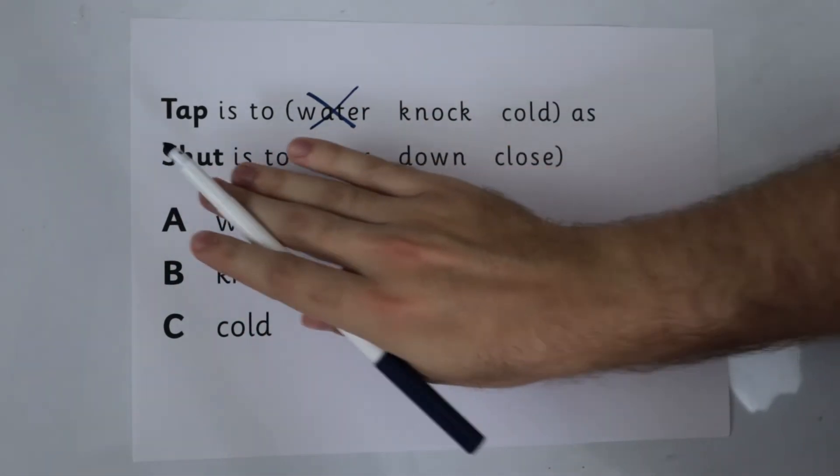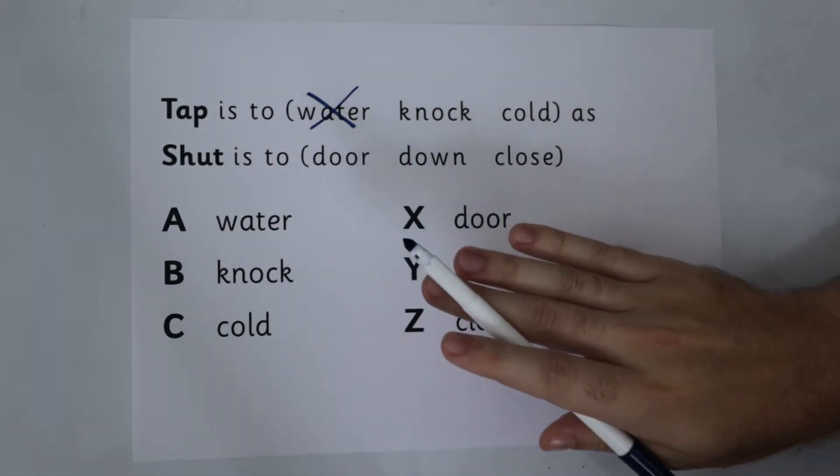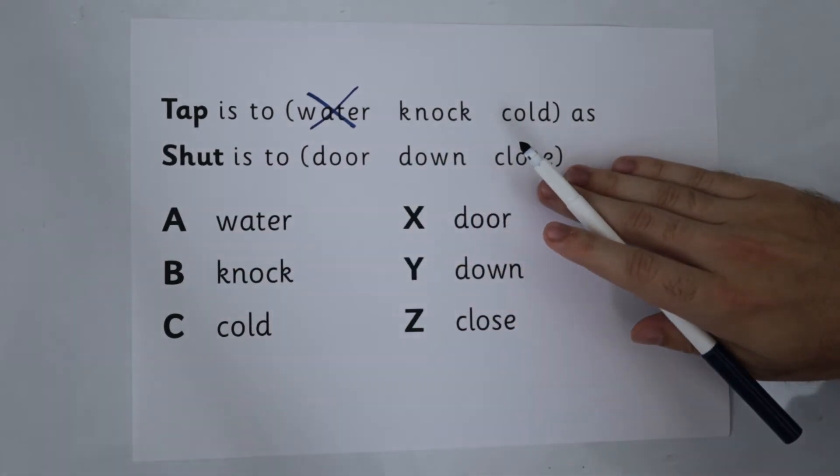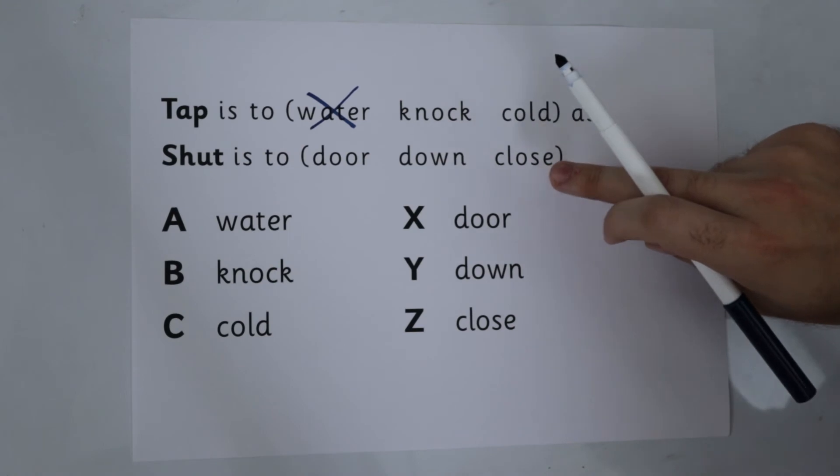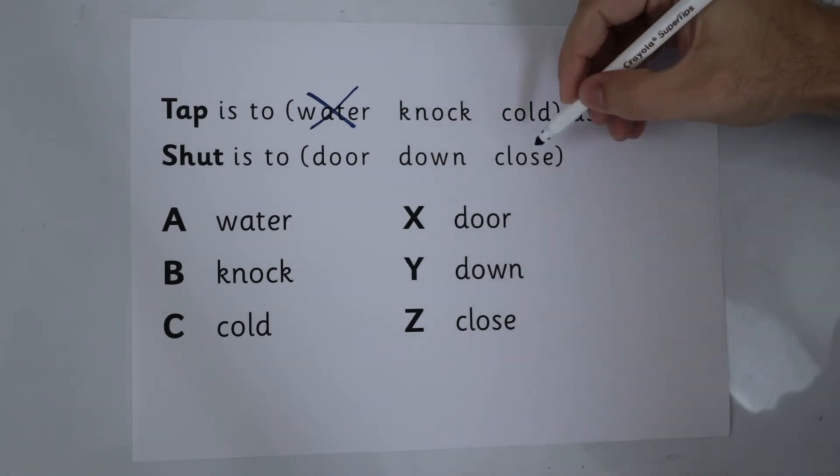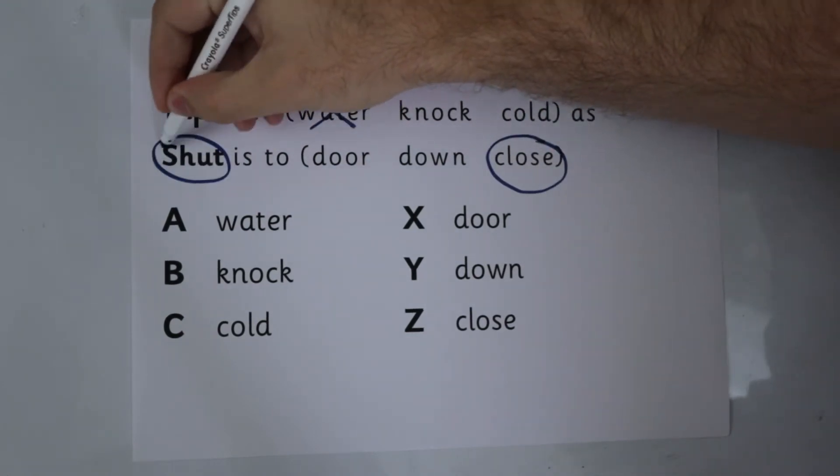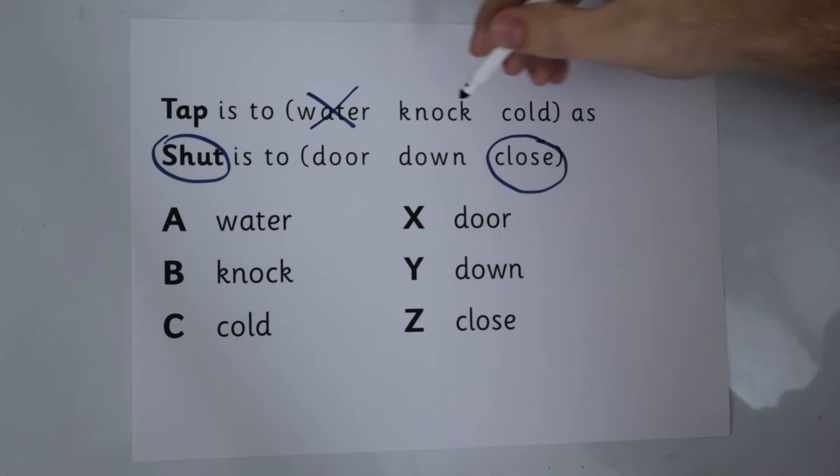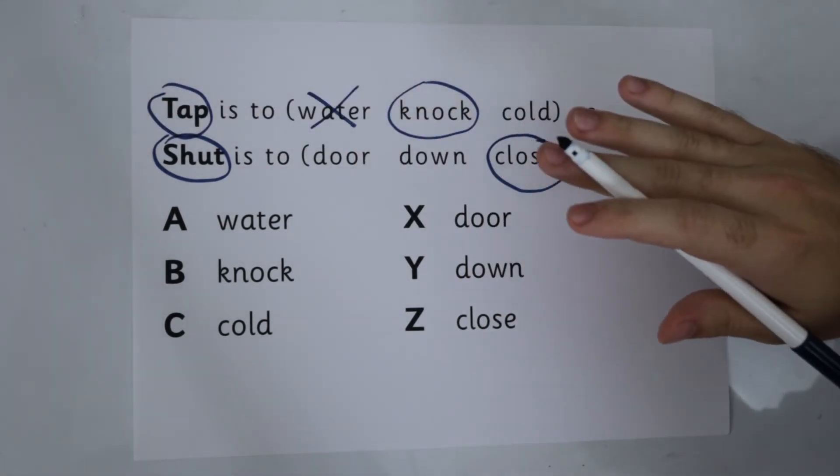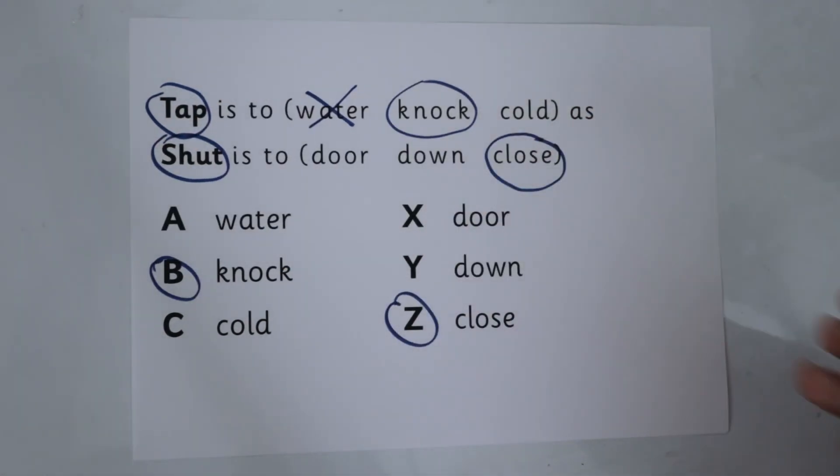Shut is to down, shut and down. Again, these two words are very often found together, but they do not mean the same thing, so it cannot be down. Shut is to close, another word which can be pronounced in two different ways with two different meanings, but we know this is going to mean to close. Close and shut mean the same. They are synonyms. Knock and tap also mean the same. They are synonyms. Our answer therefore must be B for knock and Z for close.